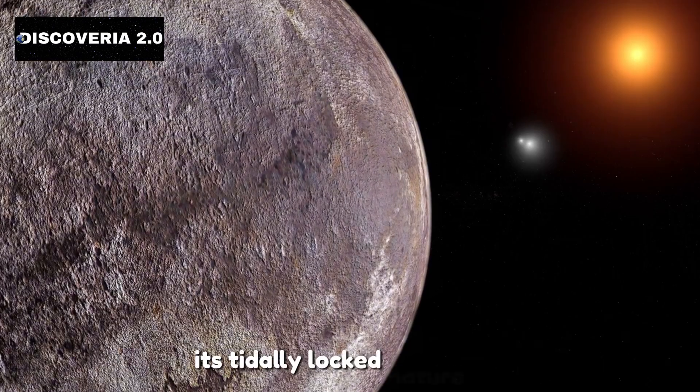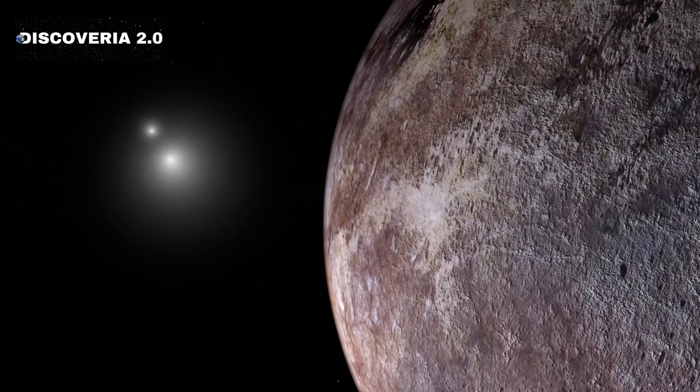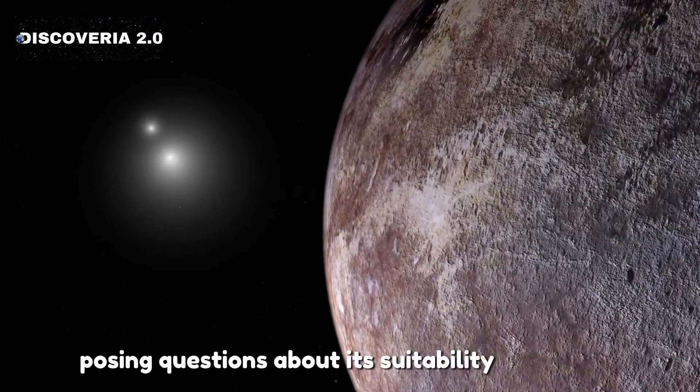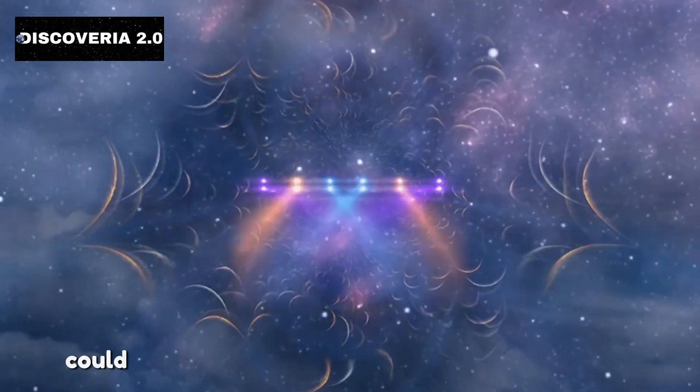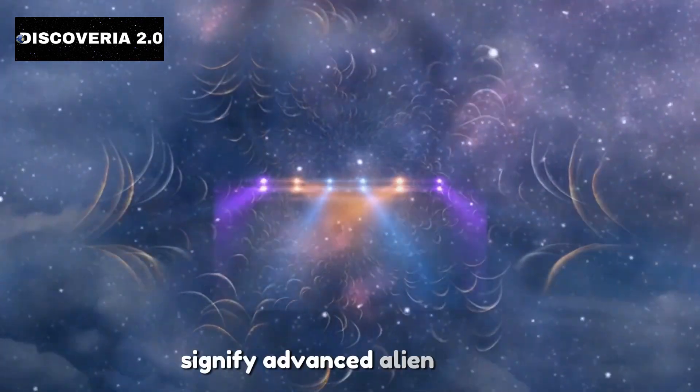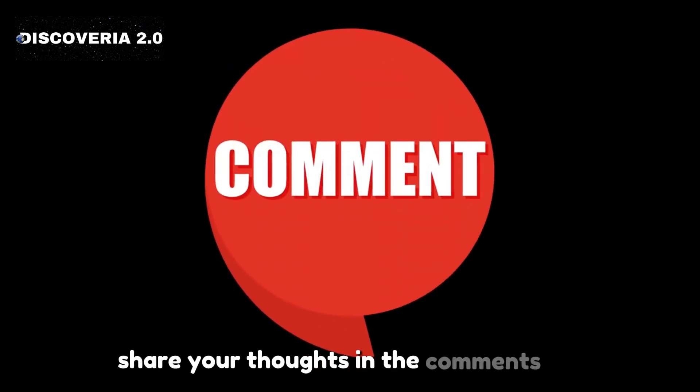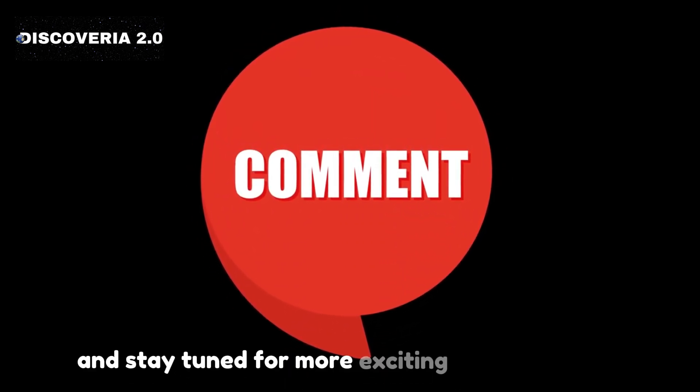Its tidally locked nature creates a stark contrast between its day and night sides, posing questions about its suitability for life. Could the strange lights on Proxima Centauri b signify advanced alien life, or is there another explanation waiting to be uncovered? Share your thoughts in the comments, and stay tuned for more exciting discoveries.